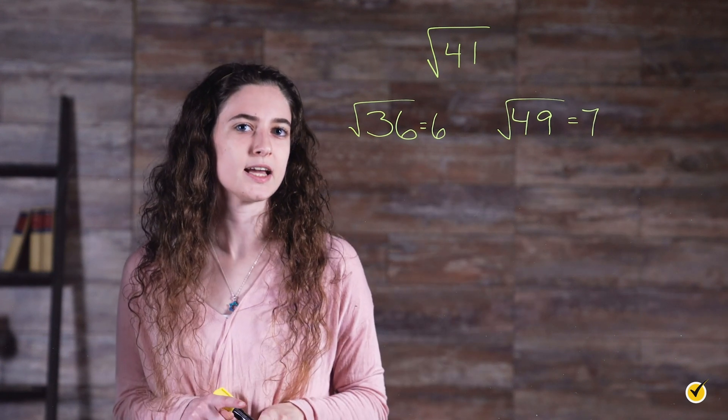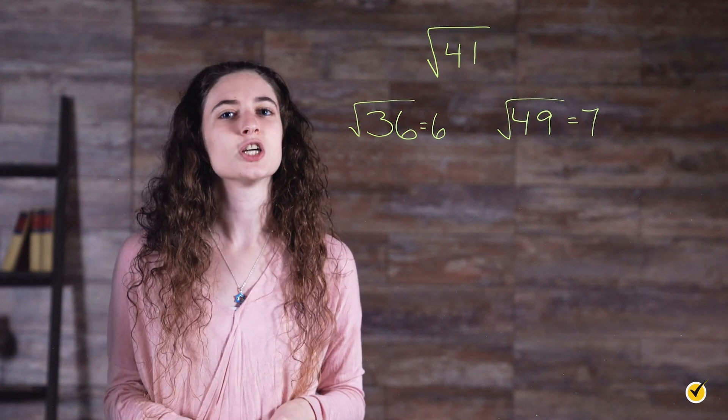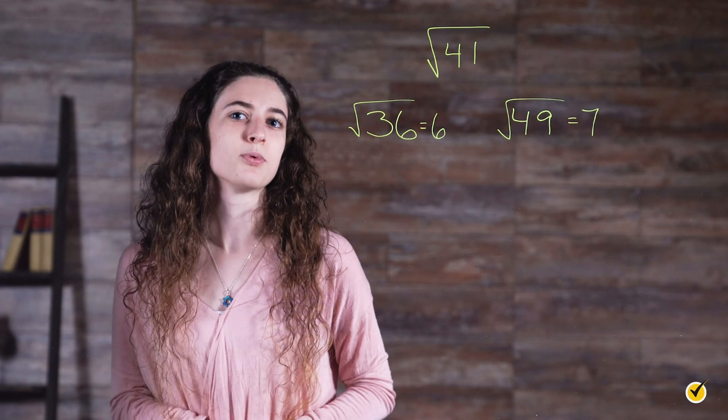Notice this doesn't give you a specific answer of what the square root of forty-one is in decimal form, but it gives you a general location of where it would fall in a sequence of numbers, which is typically all that you need to put it in order. Now that we have reviewed how to order numbers, let's practice by putting this sequence of numbers in order from least to greatest.